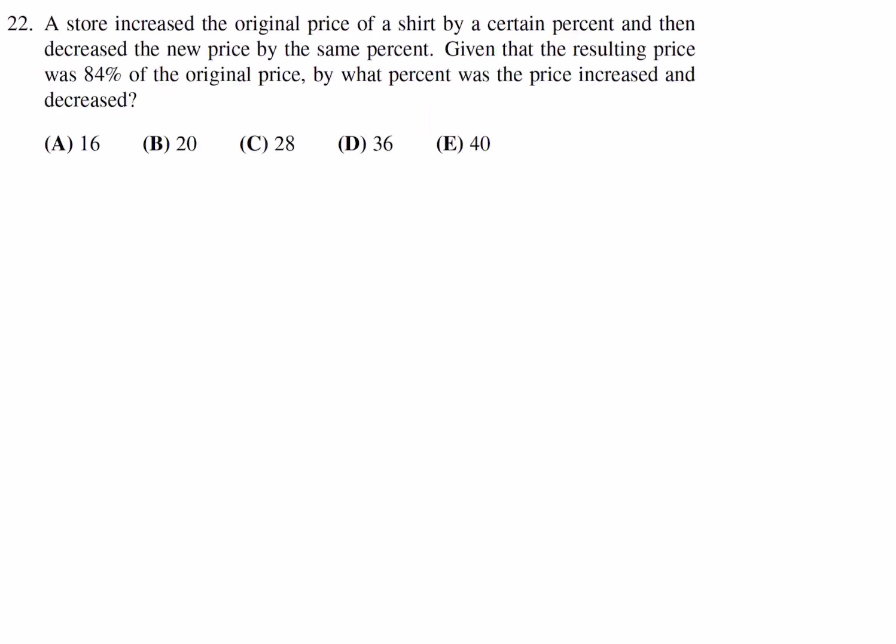A store increased the original price of a shirt by a certain percent and then decreased the new price by the same percent. Given that the resulting price was 84% of the original price, by what percent was the price increased and decreased? Well, the first thing that you did was you increased the price by a certain amount. So 1 plus x over 100 and you multiply that by the price. And then you take the same result and you decrease that by the same percentage, so 1 minus x over 100.